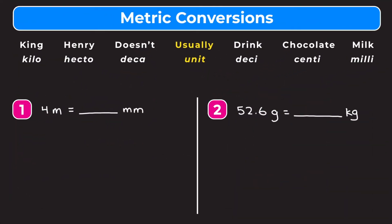In this video we're learning how to convert metric units. At the top of our screen we have a phrase that's going to help us when we're converting metrics. The phrase is: King Henry doesn't usually drink chocolate milk, and each word in our phrase stands for a different metric prefix.